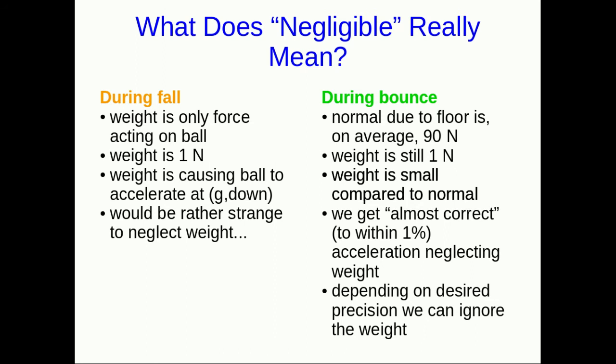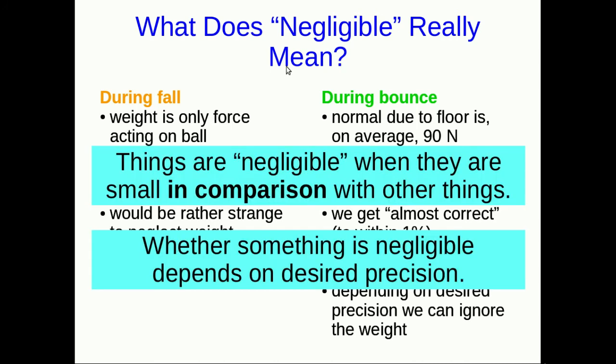We're only going to make an error of about 1% by neglecting it—it's only around 1% of the size of the normal force. So if we just ignore it in F_net, we're only making an error of one part in 90. As long as we don't need precision better than 1%, we can go ahead and do that. Just look at that argument because it's important to understand. Things are negligible when they're small in comparison with other things. We're not talking about the absolute size of things we neglect, but whether they're negligible in comparison to other things. Whether something is negligible depends on what precision you need. If you're neglecting something that causes a 1% error and you need better than 1% precision, you shouldn't do that. But much of the time, we don't need that sort of precision.